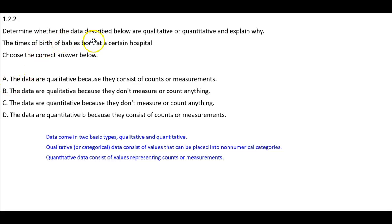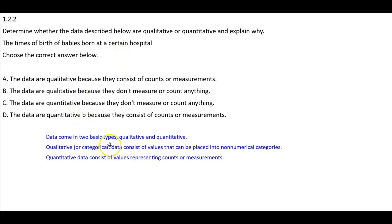Determine whether the data described below are qualitative or quantitative and explain why. The times of birth of babies born at a certain hospital. Now remember, the data come in two basic types: qualitative and quantitative.